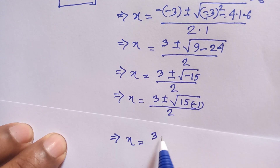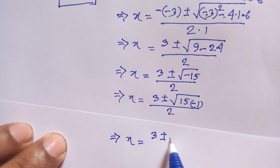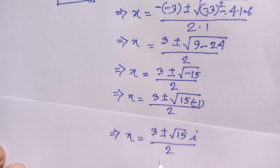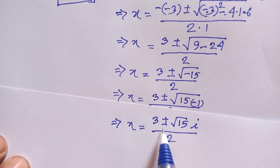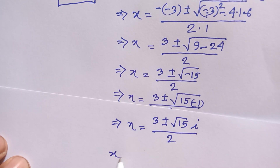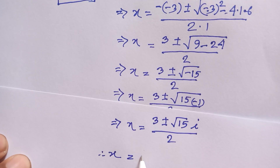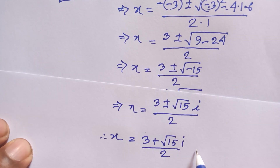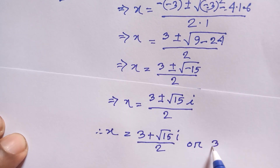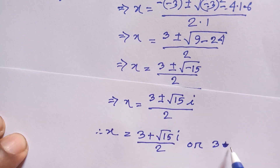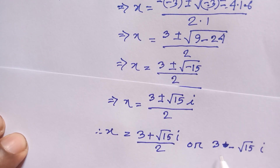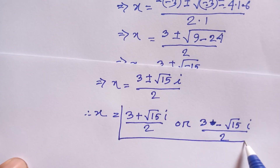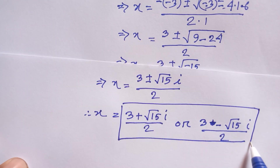Since we have plus or minus and the square root of minus 15, we can write root of minus 1 as i. So we have two complex solutions: x equals (3 + i√15) / 2, or x equals (3 - i√15) / 2. This is the complete solution. Thanks for watching, please subscribe to my channel for more videos. Bye bye.